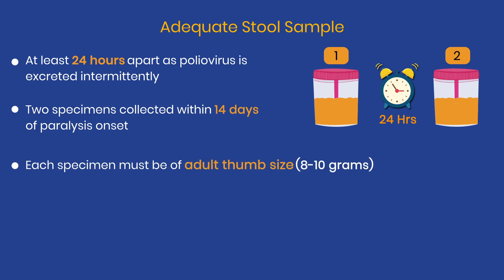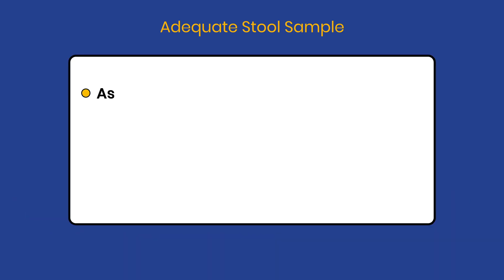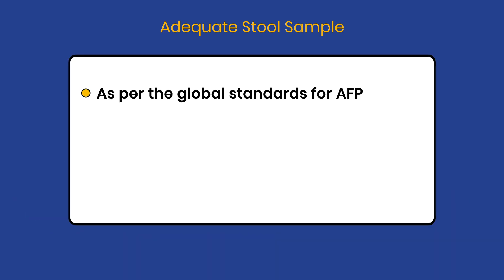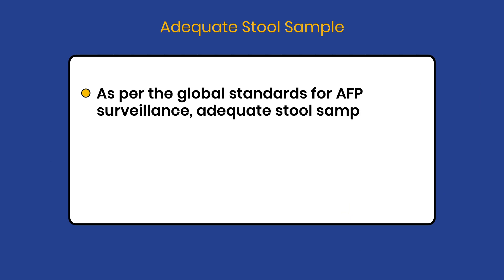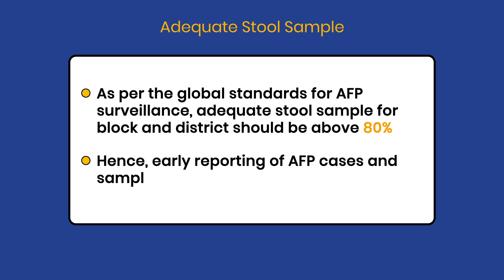Each sample should be of an adult thumb size and reach the lab in good condition. As per the global standards for AFP surveillance, adequate stool samples for block and district should be above 80%. Hence, early reporting of AFP cases and sample collection is important.